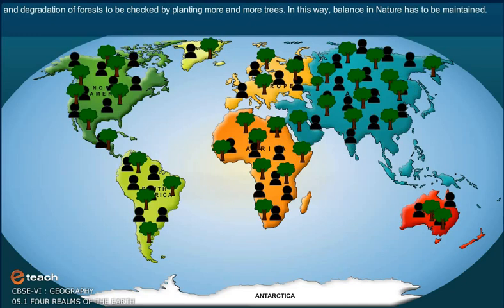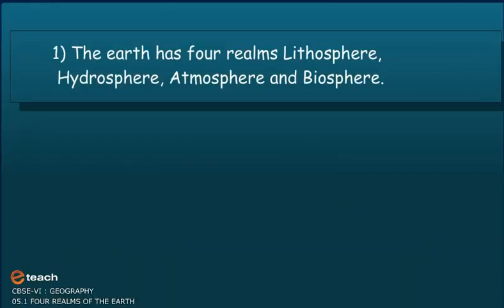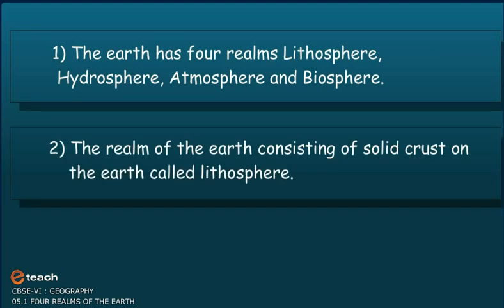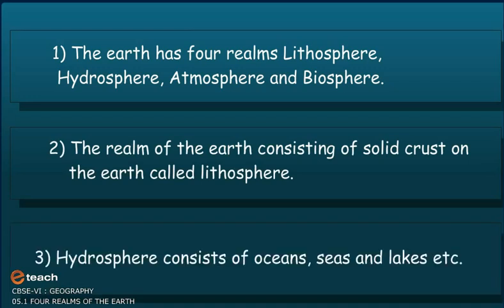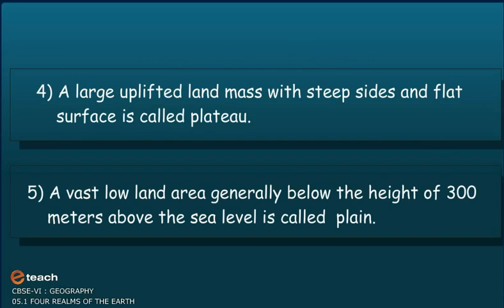In this way, balance in nature has to be maintained. The Earth has four realms: lithosphere, hydrosphere, atmosphere, and biosphere. The realm consisting of solid crust on the Earth is called lithosphere. Hydrosphere consists of oceans, seas, and lakes, etc. The large uplifted land mass with steep sides and flat surface is called a plateau. A vast, low land area generally below the height of 300 metres above sea level is called a plain.